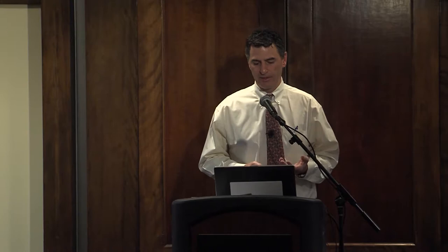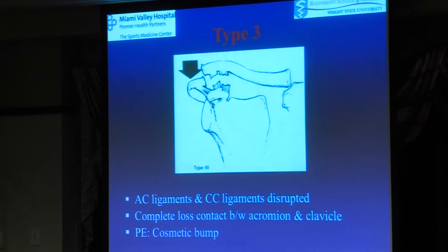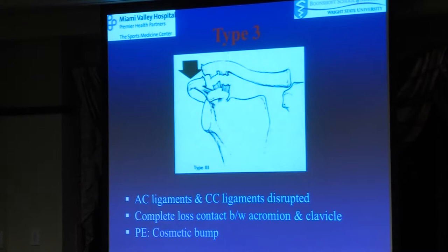Type 3 is when the CC ligaments are torn and you really start to see deformity. It's a cosmetic problem, not necessarily a surgical problem — there is some controversy, but the general consensus is no surgery, and that's the test answer. A small subset — like a throwing athlete, a quarterback or pitcher who really needs proper scapulothoracic mechanics — might benefit from restoring normal anatomy, but you can still make an argument not to operate.